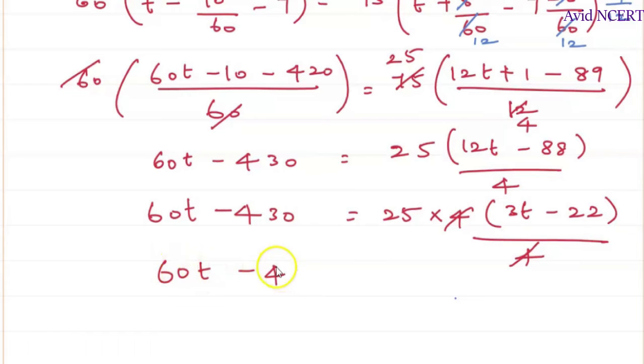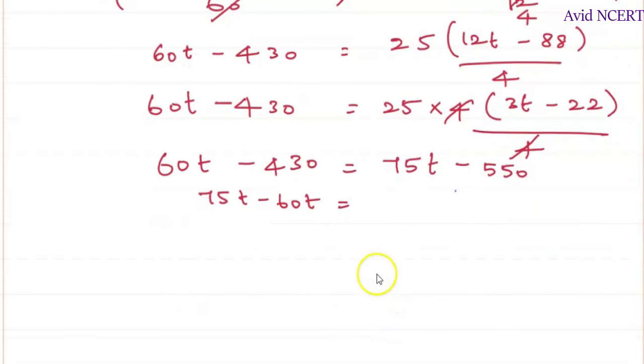So grouping t's together, which is 75t minus 60t equals minus 430 plus 550. So which is 15t equals plus 550 minus 430 is 120.